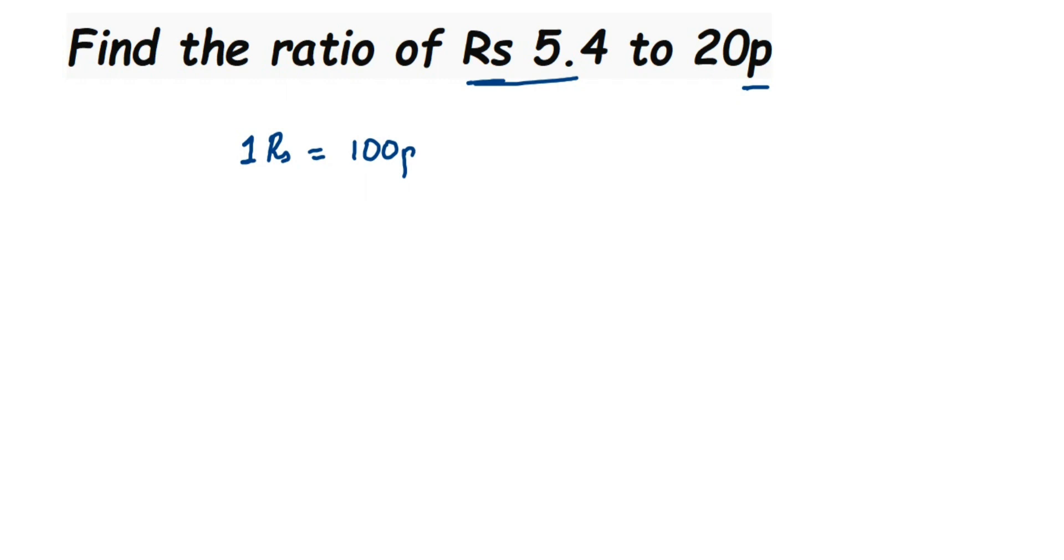When you're converting rupees to paisa, we have to multiply. You're converting a higher unit to a smaller unit, so we do multiplication. To convert rupees 5.4, I'm going to multiply with 100.